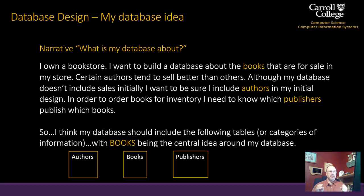Next, we develop a narrative for our database. In this example, I own a bookstore and want to build a database about books for sale. Certain authors sell better than others, so I want to include authors in the design. To order books for inventory, I need to know which publishers publish which books. My entities — which are groups of related information, or tables — will be authors, books, and publishers.